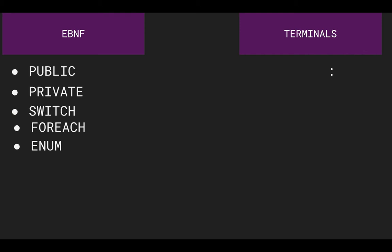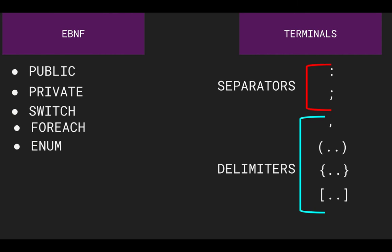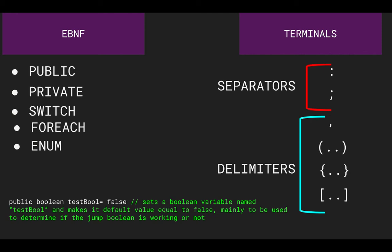The final three common terminals used are separators and delimiters, which include colons, semicolons, commas, parentheses, curly brackets, square brackets, etc. Then we have white spaces, new lines, and tabs, to then finally code commenting, which most modern programming languages have built-in code commenting.